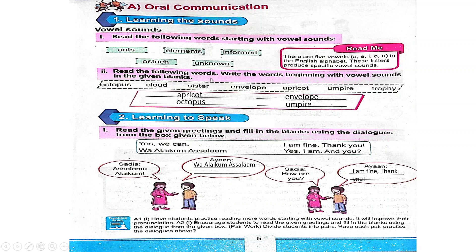The next vowel is I. Do we have a word here starting with I? Octopus, cloud, sister, envelope, apricot, umpire, trophy — no, we don't have a word which begins with I. So let's keep going.